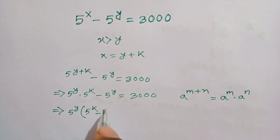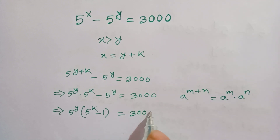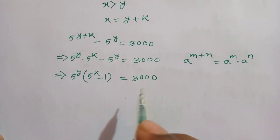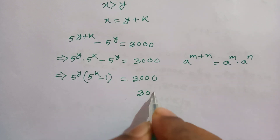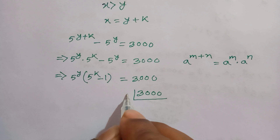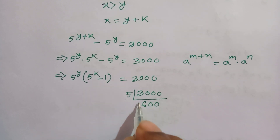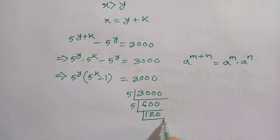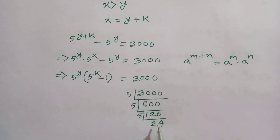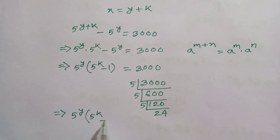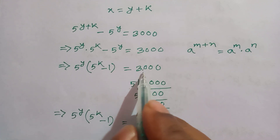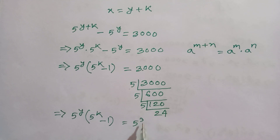This gives us 5 to the power y times the quantity 5 to the power k minus 1, equal to 3000. Now we factor 3000: 5 times 600, 5 times 120, 5 times 24 — and 24 will not break further with factor 5. So 3000 equals 5 cubed times 24.